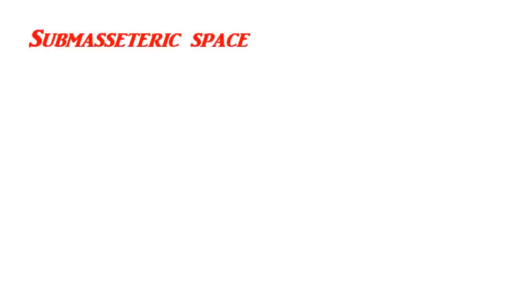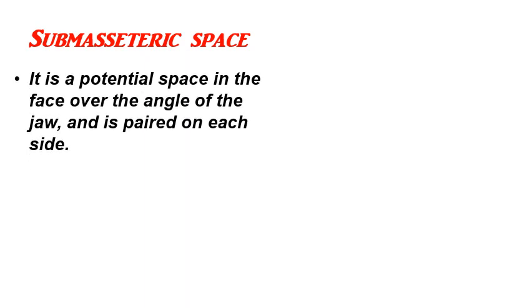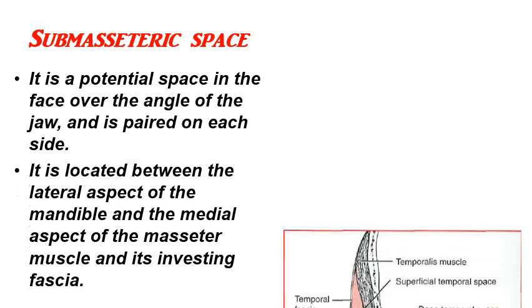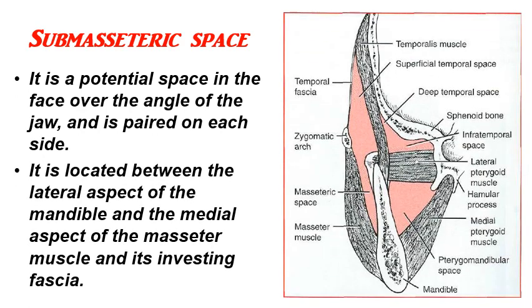Now let's focus on the masticator space, which is a major term comprising four spaces: the submasseteric, the pterygomandibular, and the temporal space with both its superficial and deep temporal compartments. Let's start with the submasseteric space. It is a potential space in the face, located over the angle of the mandible, and it is paired on each side. It is exactly located between the lateral aspect of the ramus of the mandible and the medial aspect of the masseter muscle.